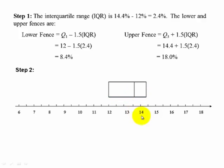The next step, we draw our fences. Here's our fence here, 8.4 percent. And this one's 18 percent. We have no values beyond this, but we do have a value down here that's an outlier because it is lower than our 8.4 percent.